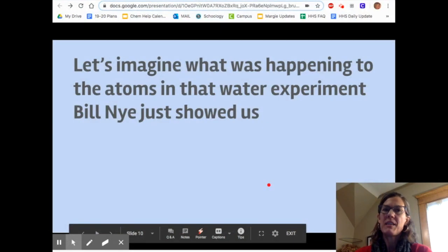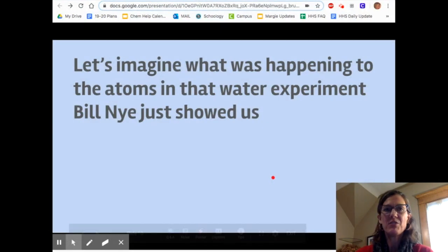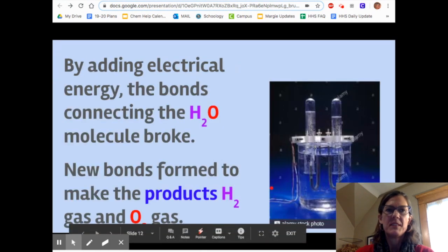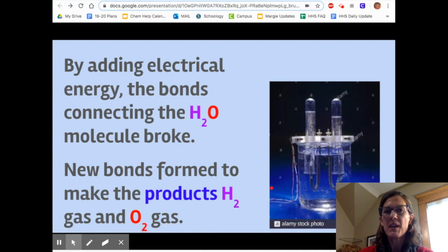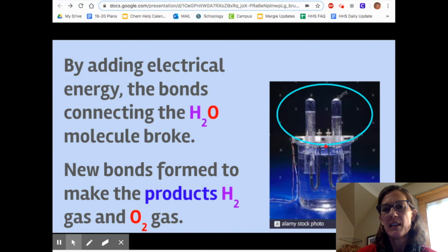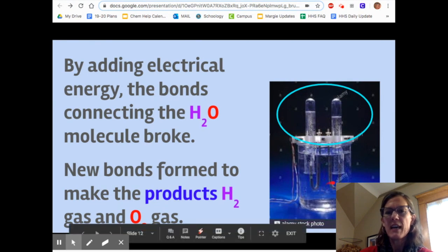Let's imagine what was happening to the atoms in that water experiment Bill Nye just showed us. He started with water, so water was the reactant, H2O. By adding electrical energy, the bonds connecting the H2O molecule broke. New bonds formed to make the products H2 gas and O2 gas. In this picture, you see the H2 and the O2 gas are collecting at the top of these tubes. The water down here was split, and the H2 went to one side and the O2 to the other. Do you know which side is which?